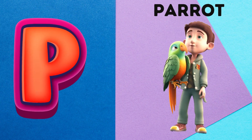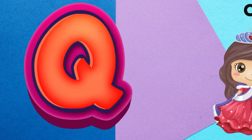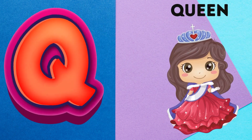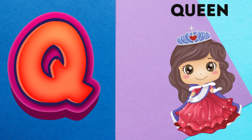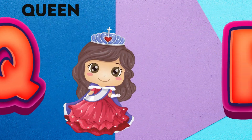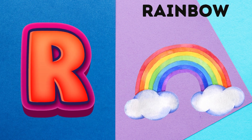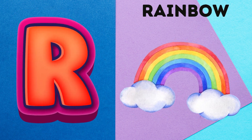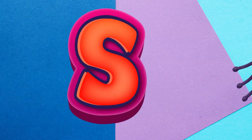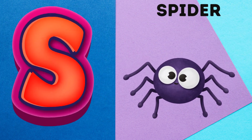P is for Parrot. Pa. Parrot. Q is for Queen. Queen. R is for Rainbow. R. Rainbow.